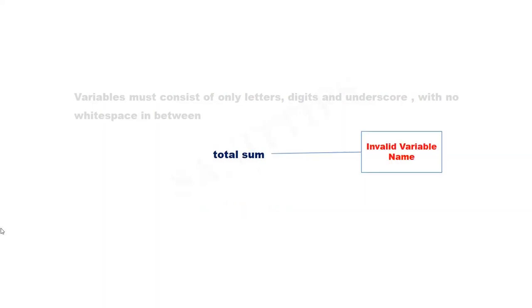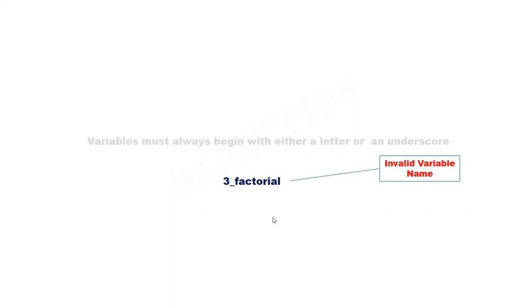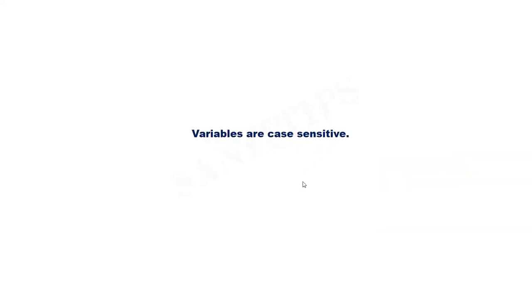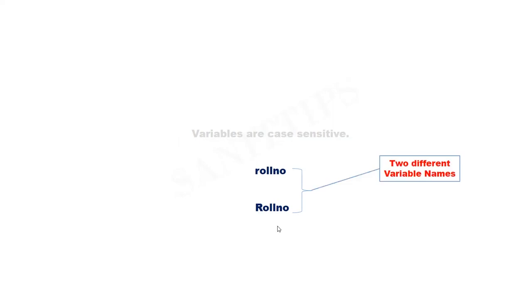A name like total base sum is invalid because white space is not allowed. Variables must always begin with either a letter or an underscore, so three_factorial is an invalid variable name as variables cannot start with a digit. Underscore_factorial is valid since it starts with an underscore. Variables are case sensitive, so for example a variable with all lowercase letters and one with a capital letter represent two different variable names.